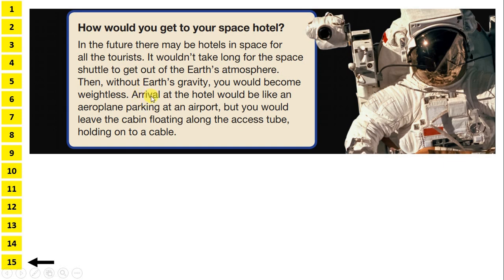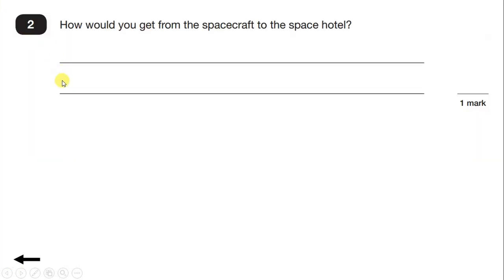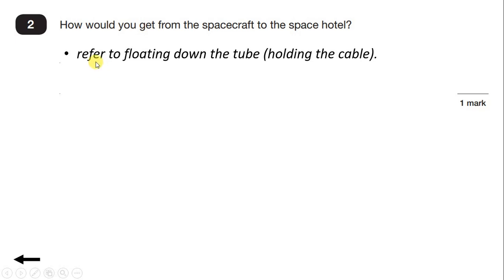Next we have: 'Arrival at the hotel would be like an aeroplane parking at an airport, but you would leave the cabin floating along the access tube, holding on to a cable.' The comparison to an aeroplane parking isn't our answer because it doesn't explain how. We need to write that you would leave the cabin floating along the access tube. To get the mark, you need to refer to floating down the tube. Holding the cable is in brackets — you can include it, but you don't have to. If you've written 'floating down the tube', you've got the mark.